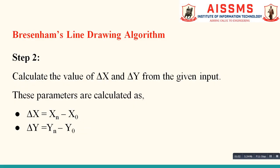The next step is to calculate the values of delta x and delta y from the given input. These parameters are calculated by standard formulas. The formula to calculate delta x is xn minus x0, where xn is the x-coordinate of the ending point and x0 is the x-coordinate of the starting point. Similarly, the formula to calculate delta y is yn minus y0, where yn is the y-coordinate of the ending point and y0 is the y-coordinate of the starting point.